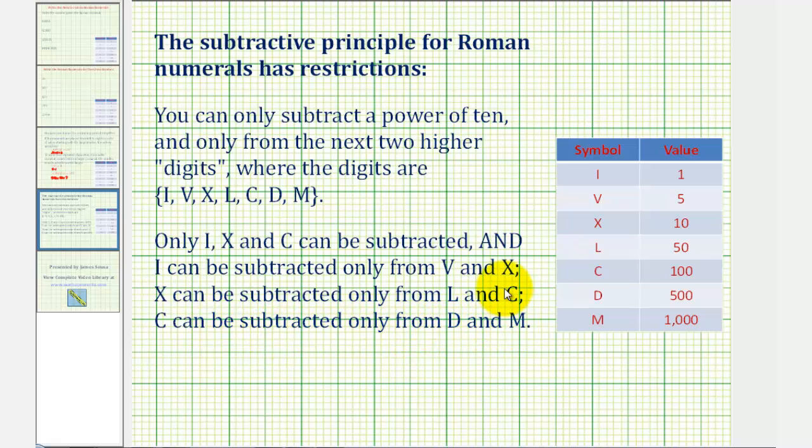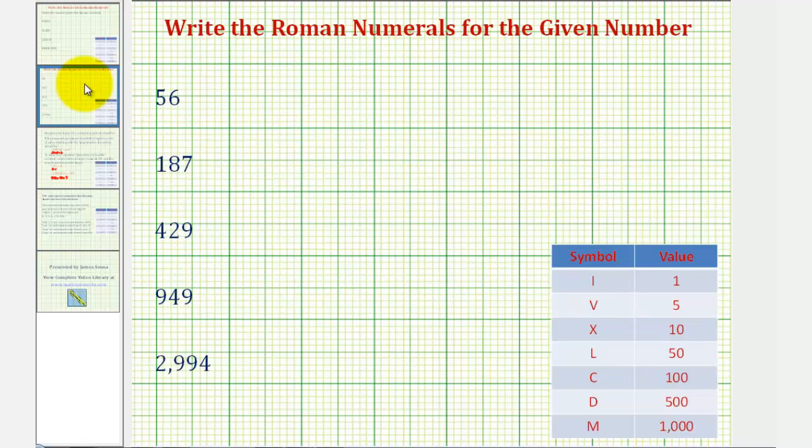Let's go back and look at our examples. For 56, notice how we can use l for 50. And then for six, we can use a v and a capital i, where the v would come first, followed by the i. This would be 50 plus six, or 56.